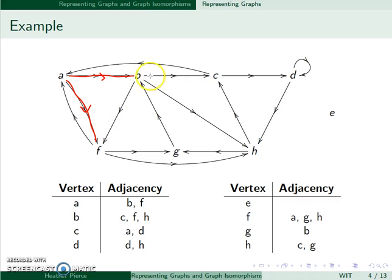B would be adjacent to C, F, and H. We can also look at D again. D would be adjacent to itself since it leaves D and comes back to D, and also adjacent to H.